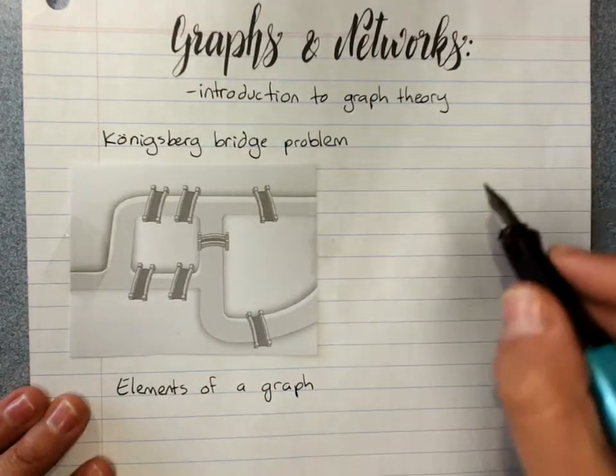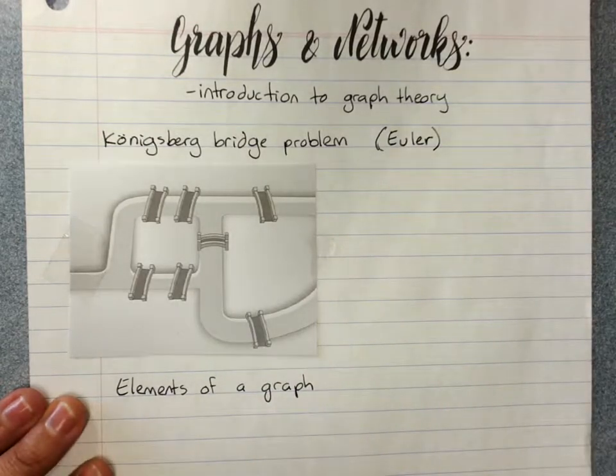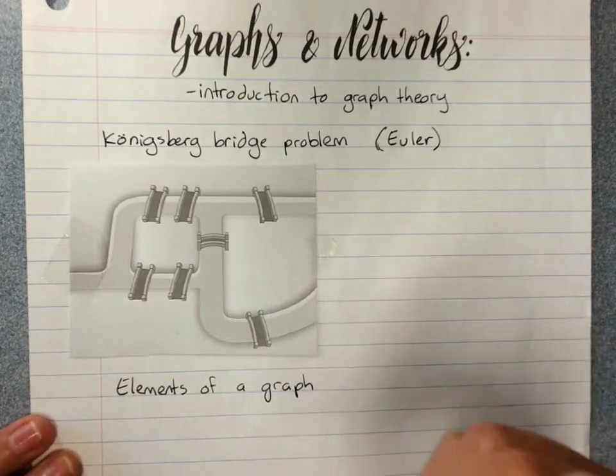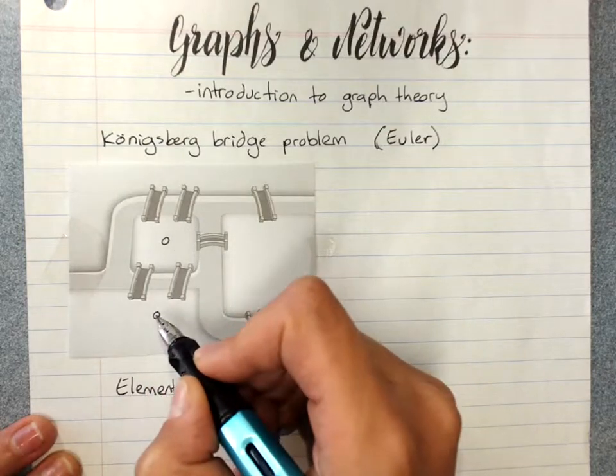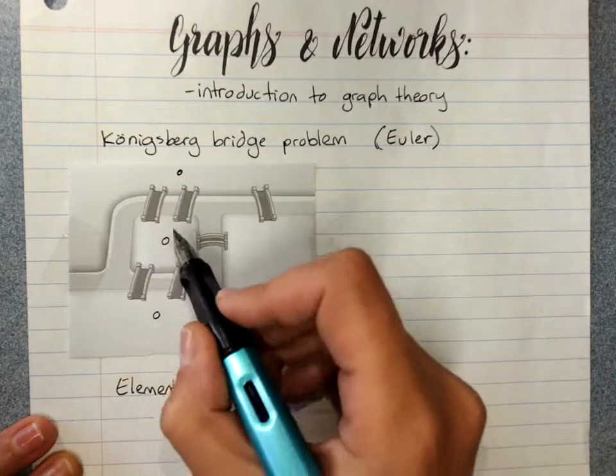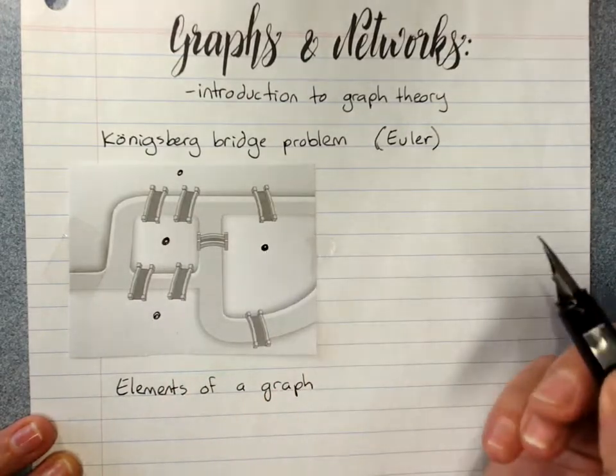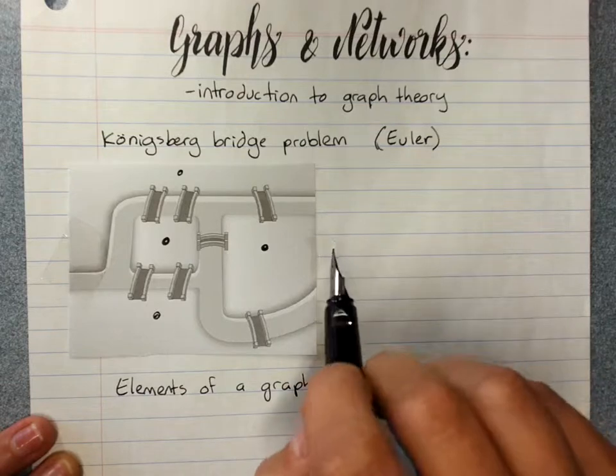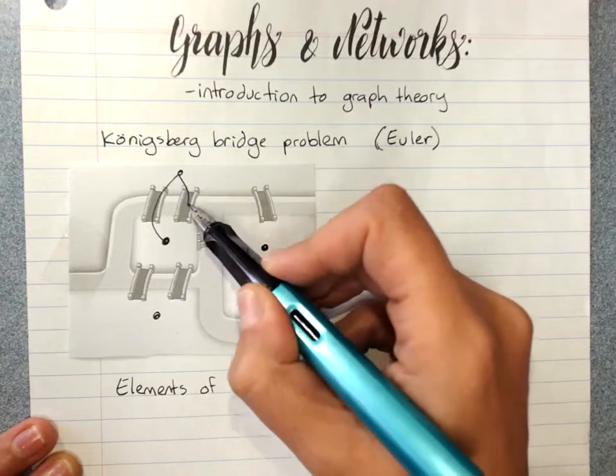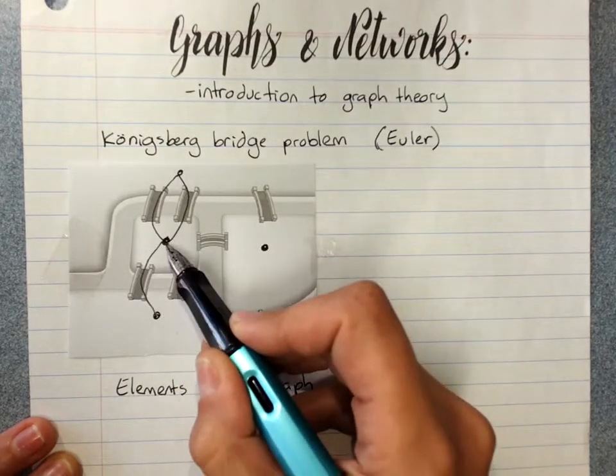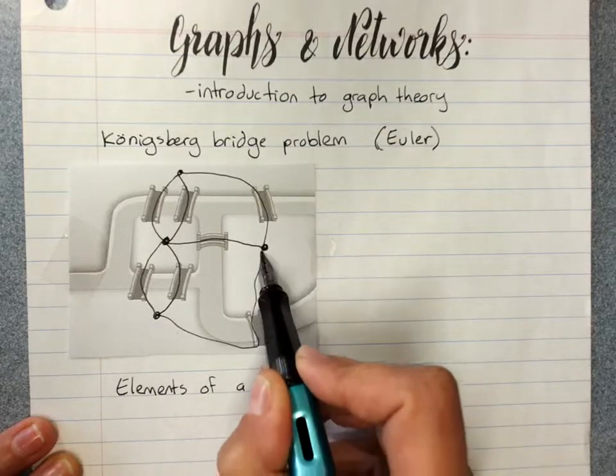And there was a mathematician named Euler, I know it looks like Euler, but it's Euler, who started analyzing the problem by simplifying the diagram, representing each destination as a point. So this island is one destination, the banks are each a destination, and this island is a destination. And then, representing each of the bridges, the things that connected the two destinations, as lines. And so his simplified version ends up looking like that.